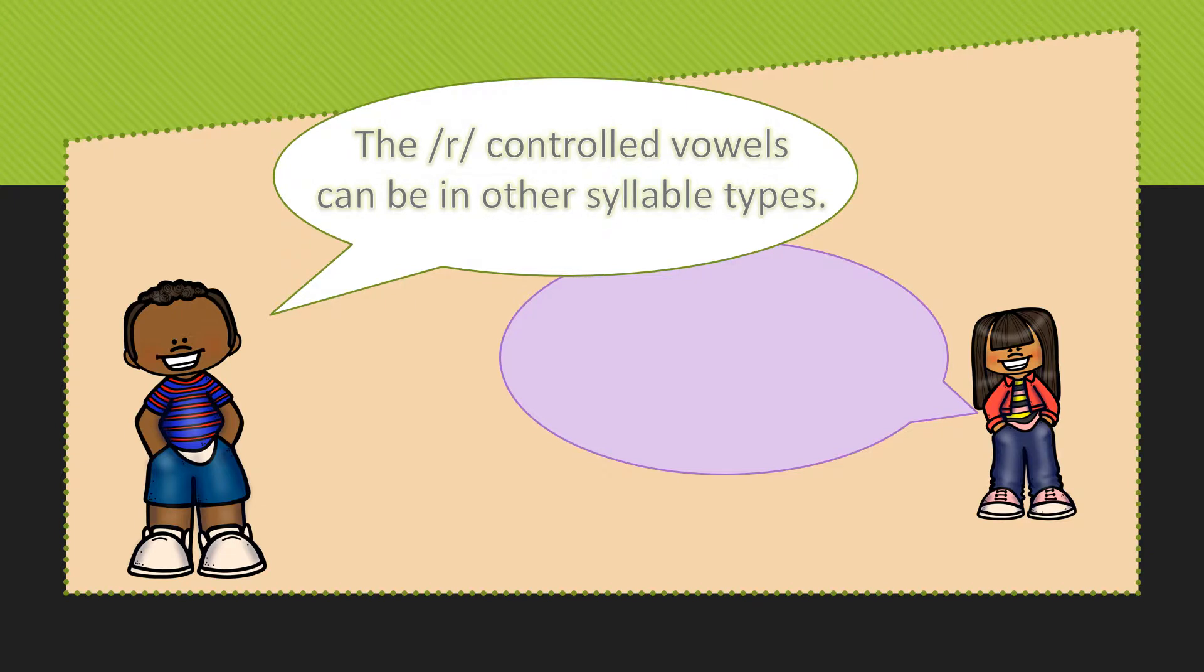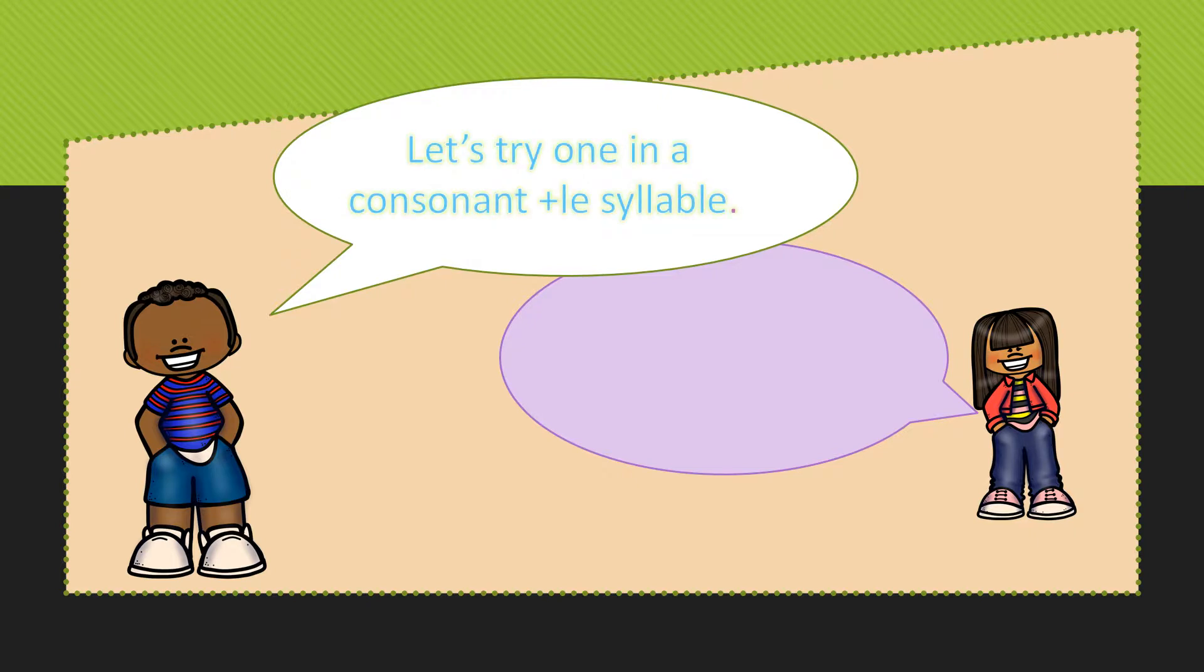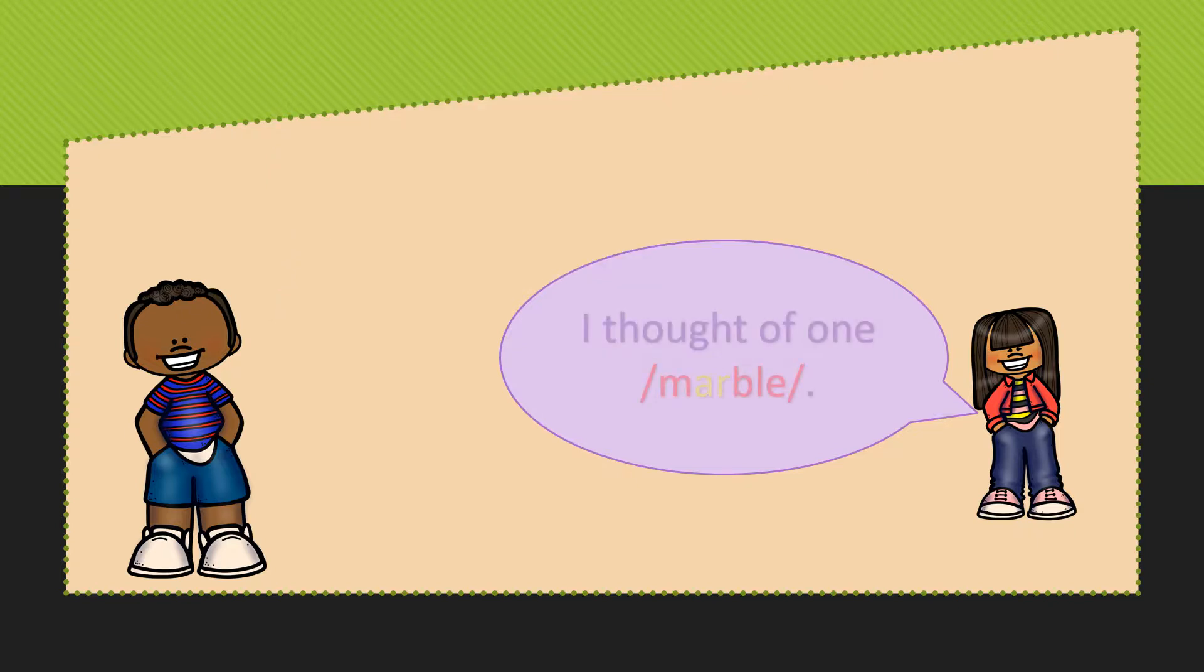The R controlled vowels can be in other syllable types as well. Let's try one in a consonant L E syllable. I thought of one: Marble. Here we have consonant L E at the end.